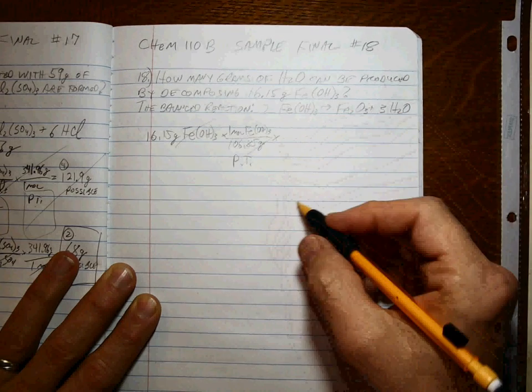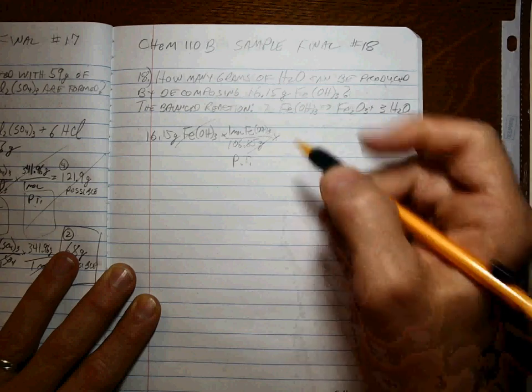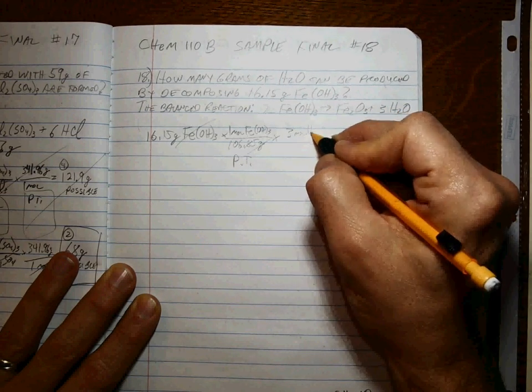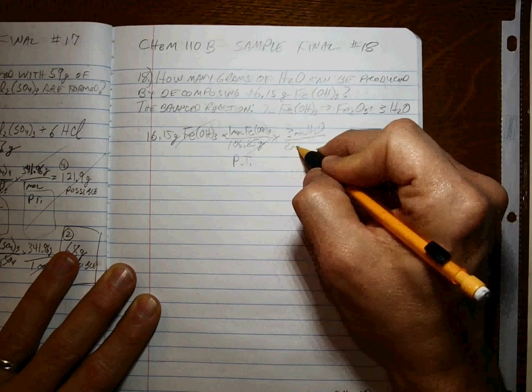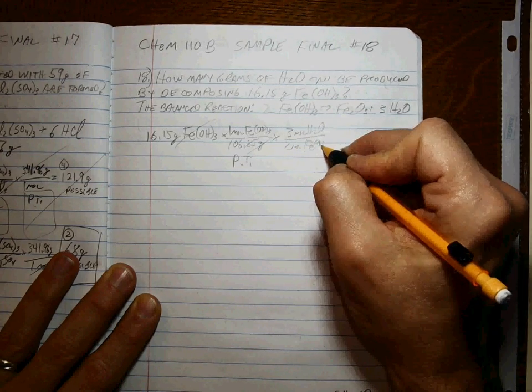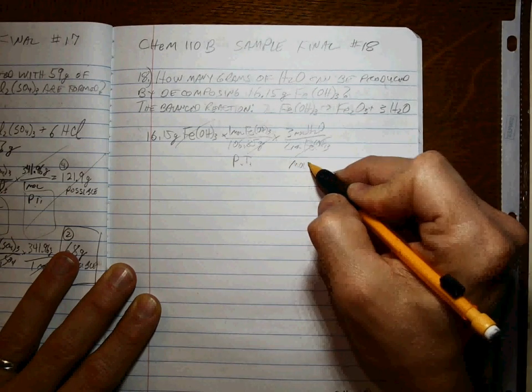Convert to moles. Once you're at moles, we look at the mole-to-mole ratio. They want to know water, so that's three moles of water every two moles of iron(III) hydroxide. That's the mole-to-mole ratio step.